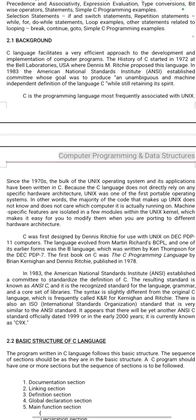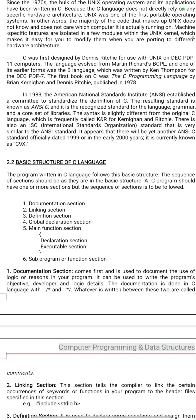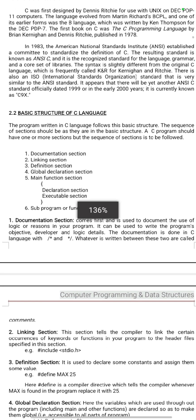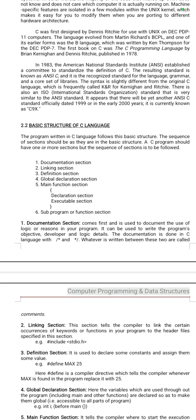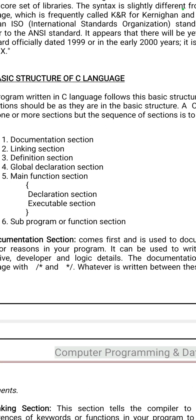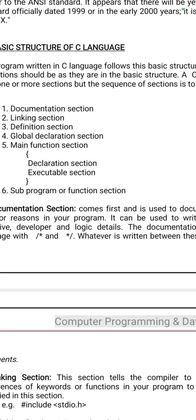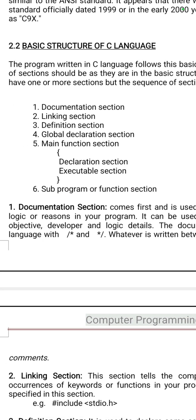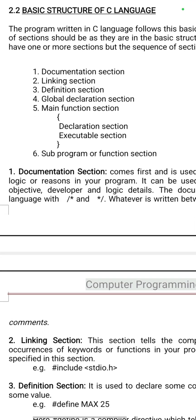A very important question is the basic structure of C language. The entire structure is divided into sections: documentation section, linking section, definition section, global declaration section, and main function. In the main function, declaration section and executable section parts are there, and depending upon the program, a sub-program section.